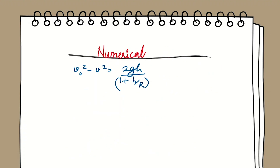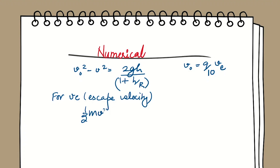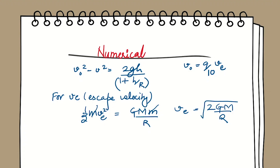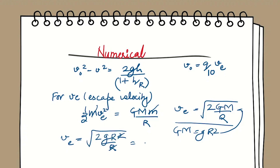Moving to the numerical part: the initial velocity is 9/10 of the escape velocity. To find escape velocity, the kinetic energy is balanced by gravitational potential energy, giving vₑ² = 2GM/r. Since GM = gR², the escape velocity is vₑ = √(2gR). Therefore, our initial velocity v₀ = (9/10)√(2gR).